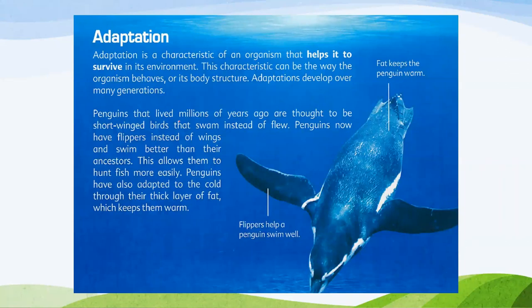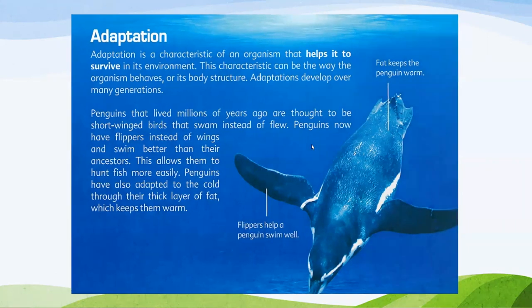Penguins, millions of years ago, are thought to have been short-winged birds that swam instead of flew. Penguins now have flippers instead of wings so they can swim better and hunt more easily. They have also been adapted to the cold through their thick layer of fat, called blubber. Fat keeps the penguin warm. That is structural adaptation.